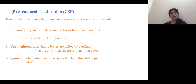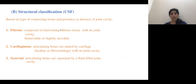For the structural classification, we use the mnemonic CSF. C stands for cartilaginous type of joint, S for the synovial type of joint, and F for the fibrous type of joint.